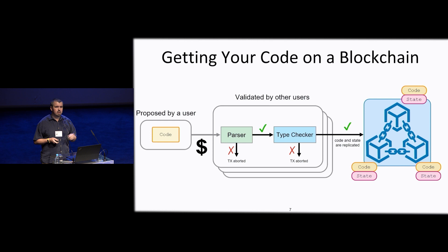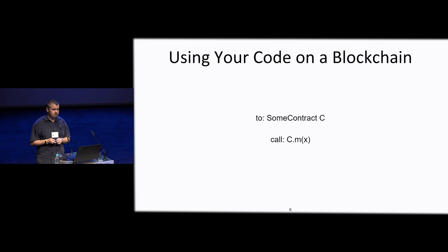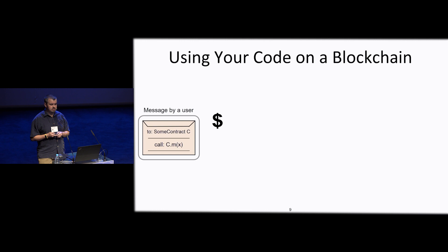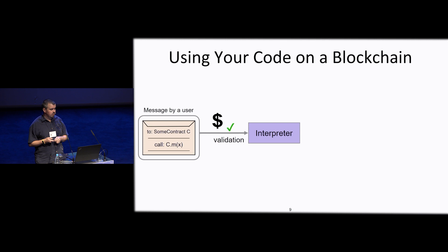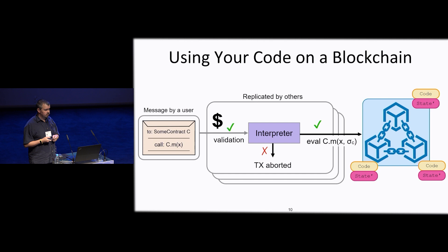After your code is replicated and propagated to the system, every participant in the consensus protocol has a copy of your code and the state. To evolve the state, you identify the smart contract module you want to interact with, identify the function and arguments to call, and form a message with some money attached. This becomes a transaction. The message containing directives for the language interpreter runs through the interpreter, and if it passes validation, the interpreter gives a new state, the same process repeats with all involved parties, and the changes are replicated consistently.